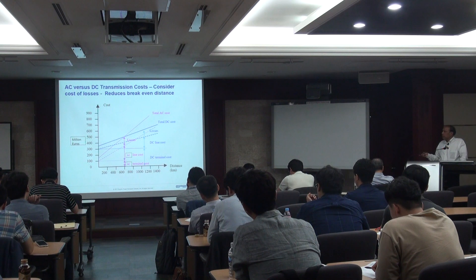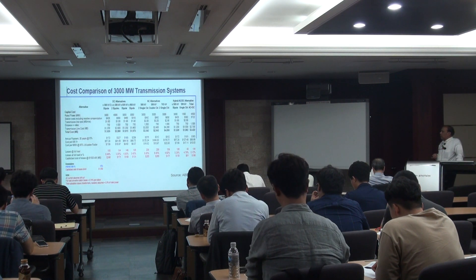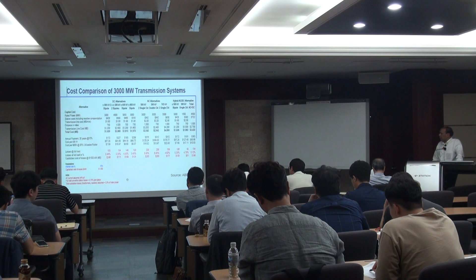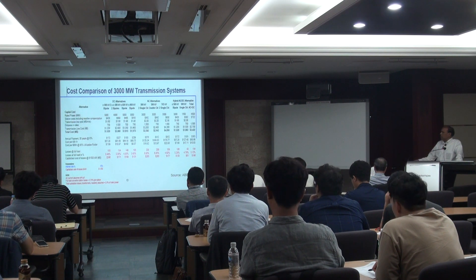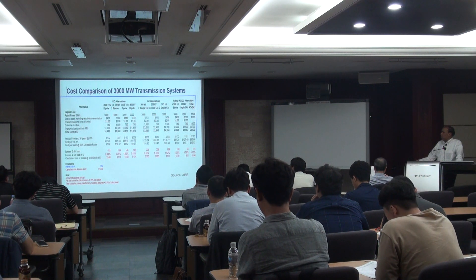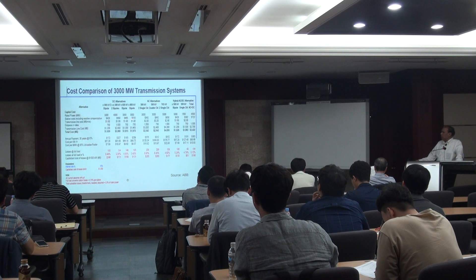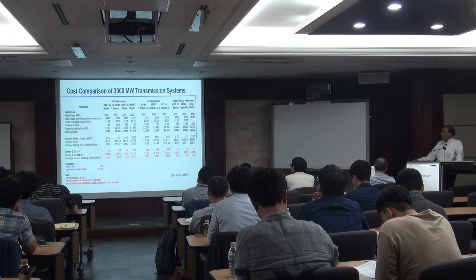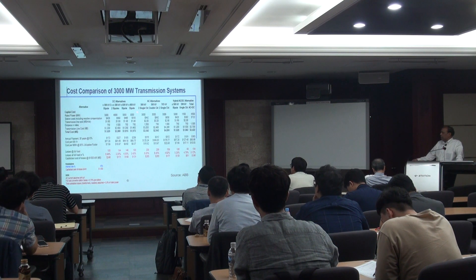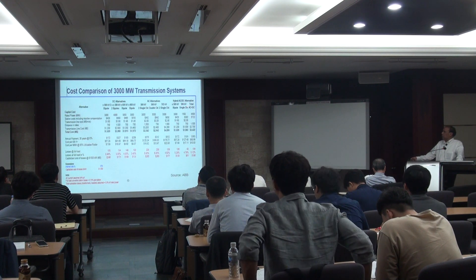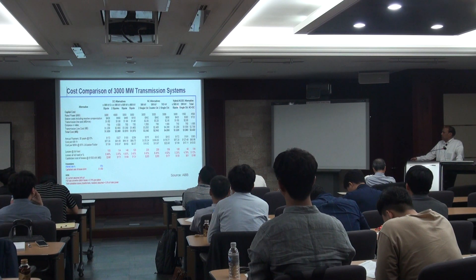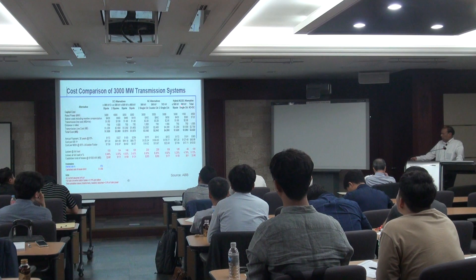An ABB study analyzed DC alternatives: a ±500 kV bipole at 3000 MW, two ±500 kV bipoles at 4000 MW, a ±600 kV bipole at 3000 MW, and an ±800 kV bipole at 3000 MW. AC alternatives included two single-circuit 500 kV lines, a double-circuit 500 kV line, or two 765 kV single circuits — all with roughly the same power rating except one configuration at 4000 MW.